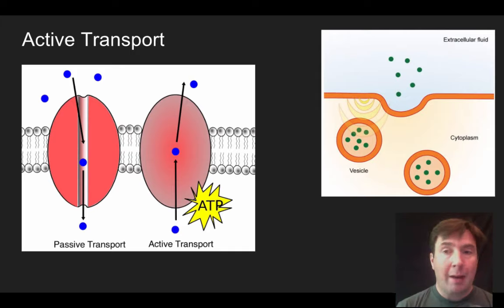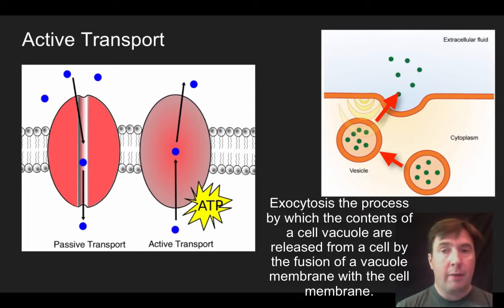If we want to get rid of materials that are in a vesicle outside the cell, we can use a similar process. This is going to be exocytosis, moving stuff from inside the cell out, and we'd push the vesicle up to the membrane and then release the materials out, and that would be exocytosis. And so both endocytosis and exocytosis also fit into the form of active transport.